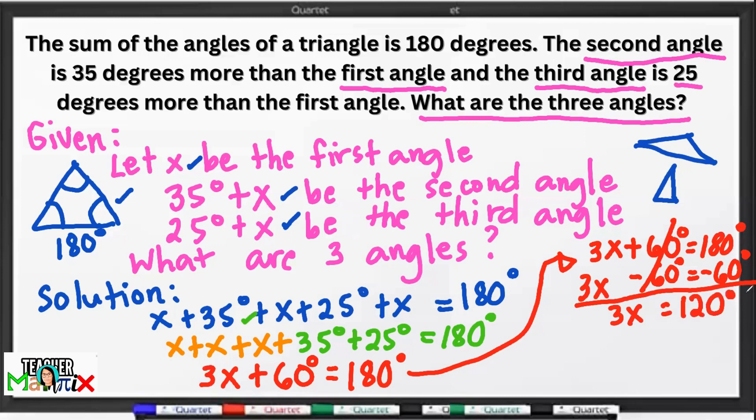Then, 180 degrees minus 60. We have 120 degrees. Since 120 degrees, ito man yung may variable. So, we divide natin sa 3 by itself, start left, and then sa right. Cancel. Then, x, the value of the first angle is 120 degrees divided by 3. That's 40 degrees.